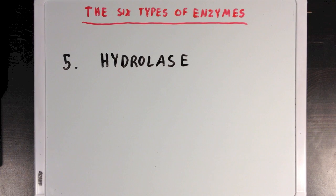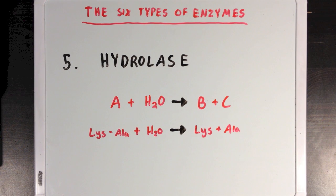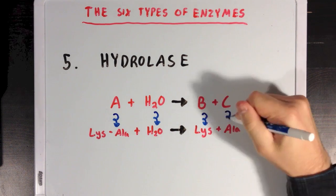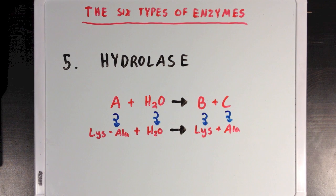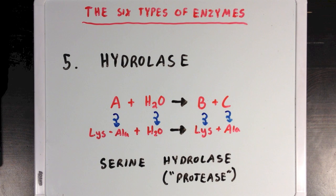Our next category is the hydrolase category. Hydrolases use water to cleave a molecule, like molecule A, into two other molecules, B and C. A great example is the hydrolysis reaction that can occur to peptide bonds. If we have a lysine-alanine dipeptide, it can be reacted with water to form two individual amino acids that are no longer bound. This hydrolysis reaction can be catalyzed by a class of enzymes called serine hydrolases, also called serine proteases, named because they are hydrolases that use a serine residue as the key catalytic amino acid responsible for breaking the peptide bond.